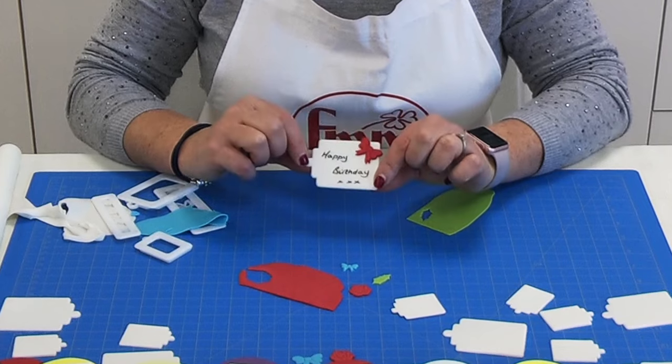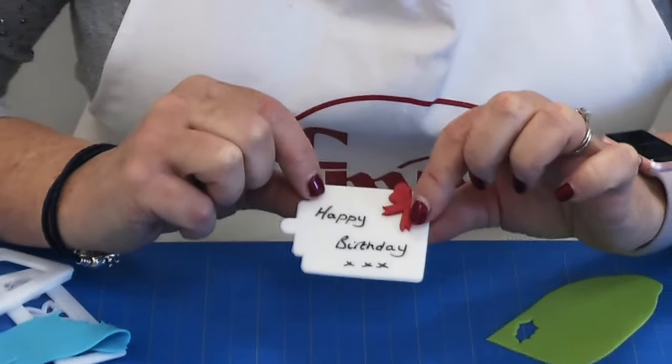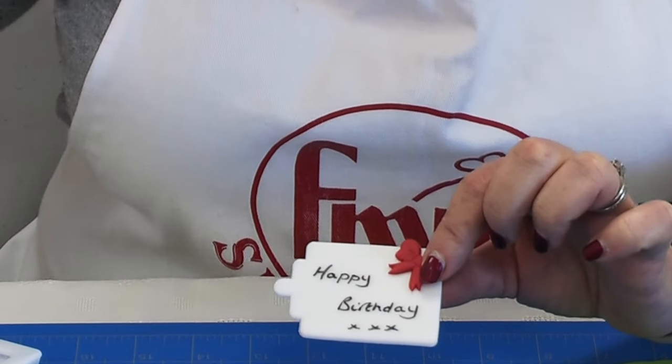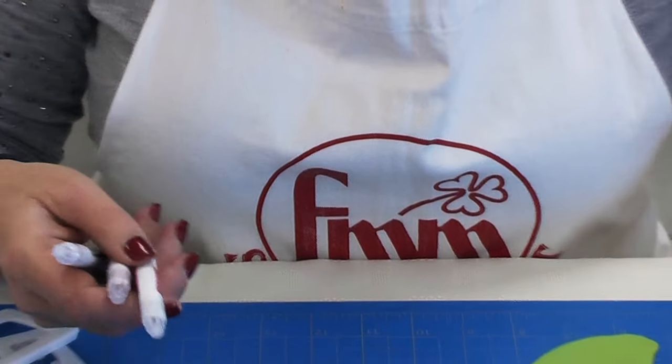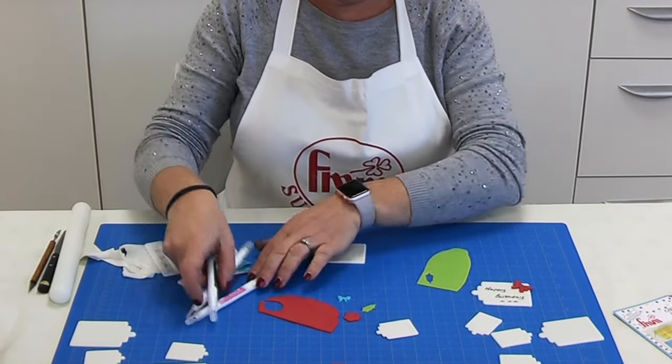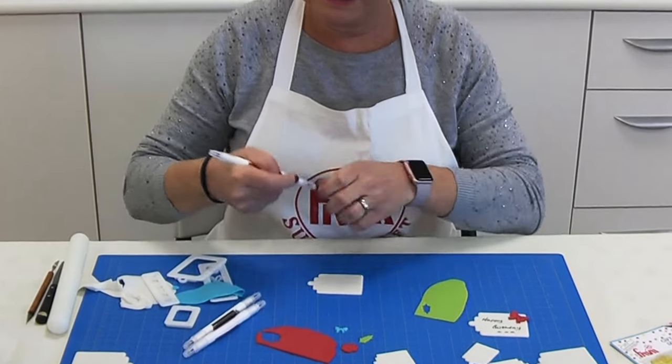Here I have one that I made earlier which has the red bow and I wrote an inscription on saying happy birthday. We wrote the inscription on using an edible pen. You can buy these from Rainbow Dust and other manufacturers. I'll show you here. You could make one for Valentine's Day.